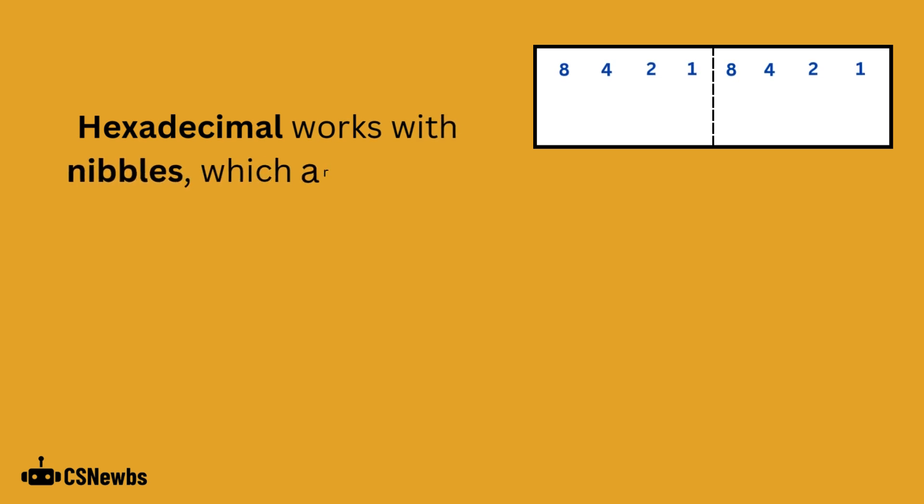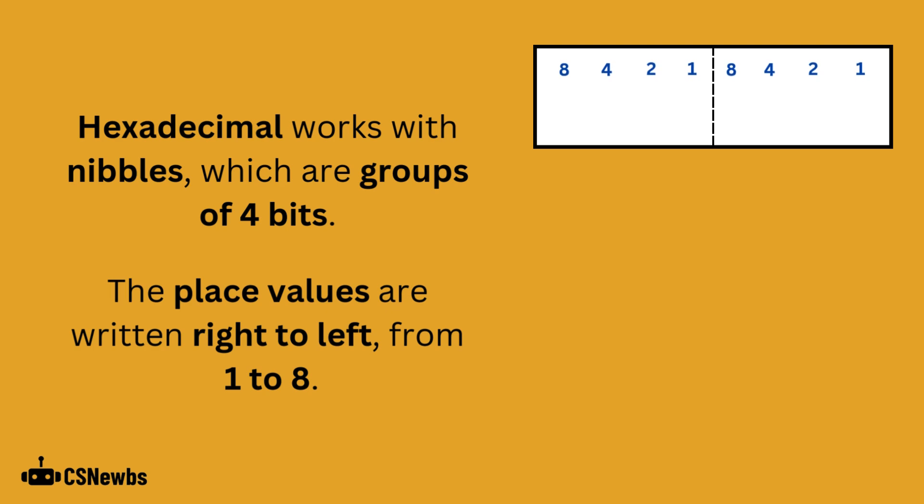Hexadecimal works with nibbles, which are groups of 4 bits. The place values are written right to left, from 1 to 8.